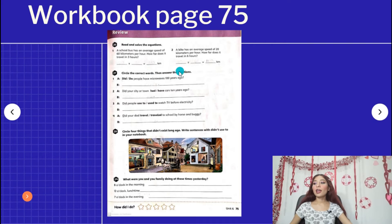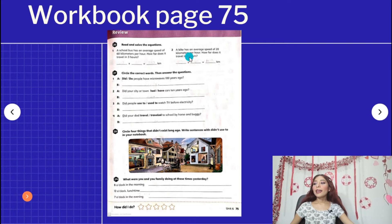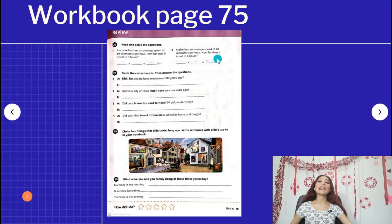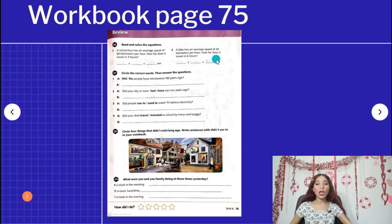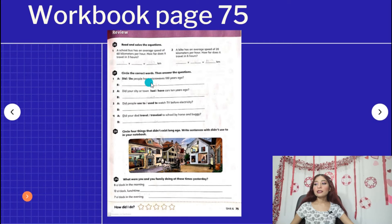It's really easy. Number two: a bike has an average speed of 20 kilometers per hour. How far does it travel in six hours? It's the same, we do the multiplication, 20 for six hours, and you have the kilometers, the result, and that's it.